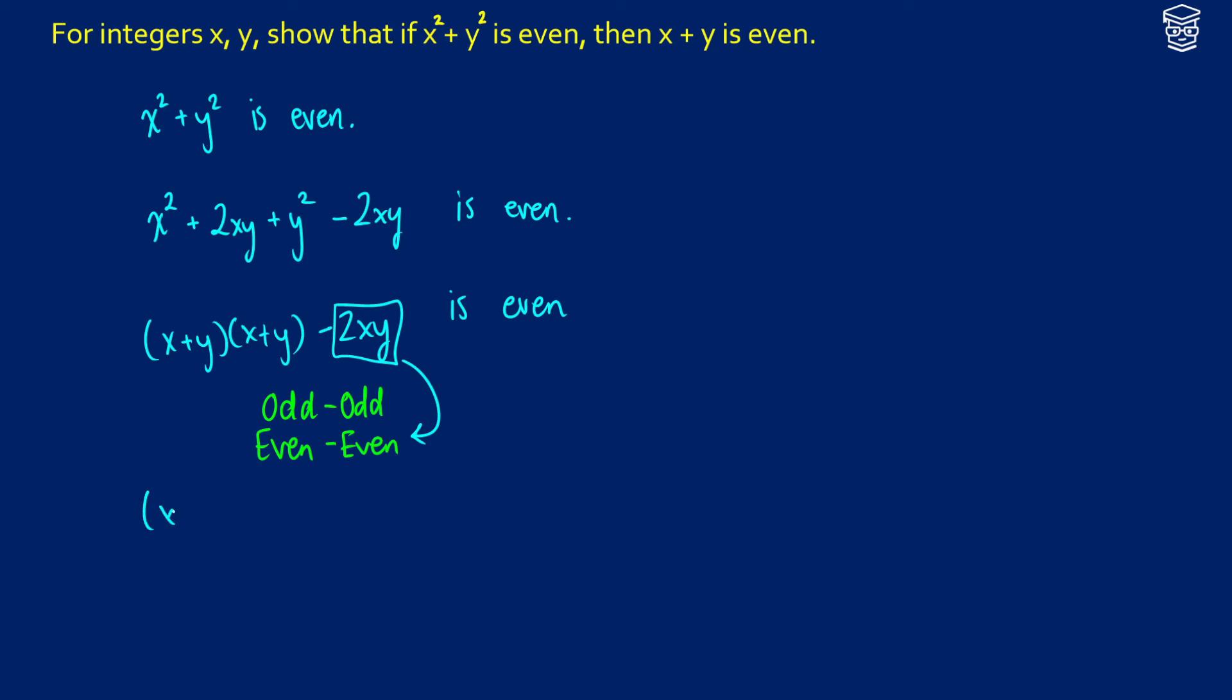So what that tells us is that x plus y times x plus y is even. Now what do we know about even numbers? What's the way that we can get to an even number? It's either going to be an even times an even, or it's going to be an even times an odd.